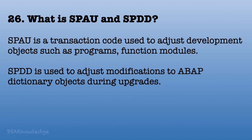What is SPAU and SPDD? SPAU is a transaction code used to adjust development objects such as programs and function modules. SPDD is used to adjust modifications to ABAP dictionary objects during upgrades.